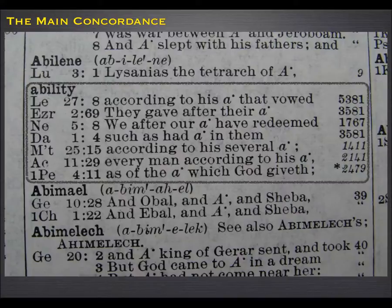That's not going to help me very much because I can't use those verses to tell me what ability means, because they're actually all translations of different words. There is a way though through Strong's number coding. By Matthew 25:15 here you'll see in italics — that means the Greek part of it — one four double one.